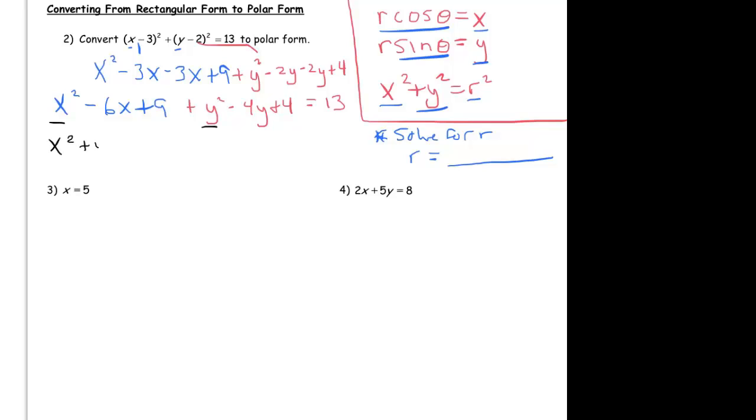Now you can replace that x with an r cosine theta and that y with an r sine theta, but I'm not going to do that just yet because then I have to square out all those terms with cosines and sines and it's just a little bit frustrating. So I'm going to multiply out x minus 3 squared.